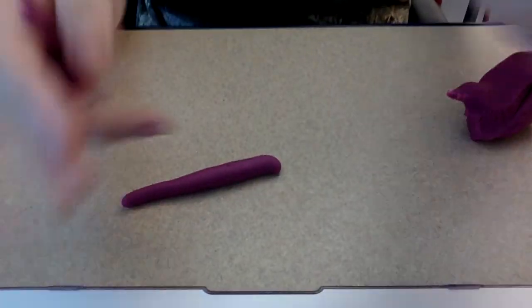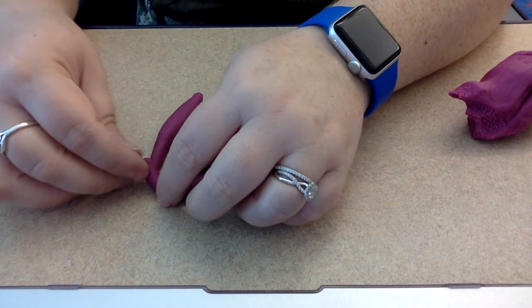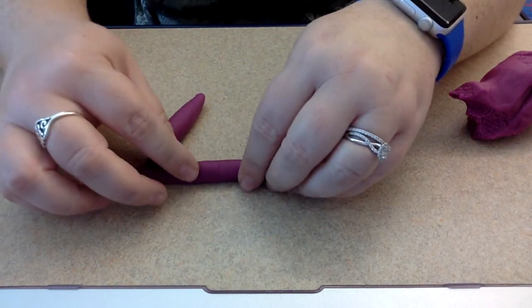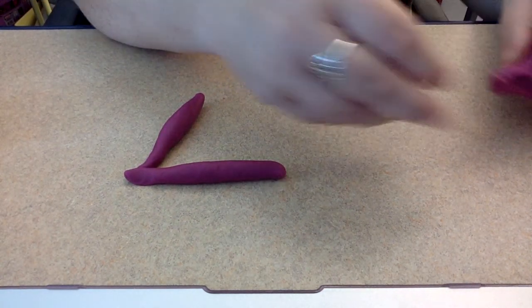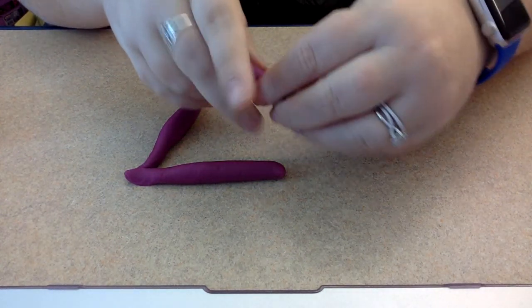I'm going to pull off some more Play-Doh and rub it between my hands to make another line. So if I'm making a triangle, how many sides do I need? I need three sides.